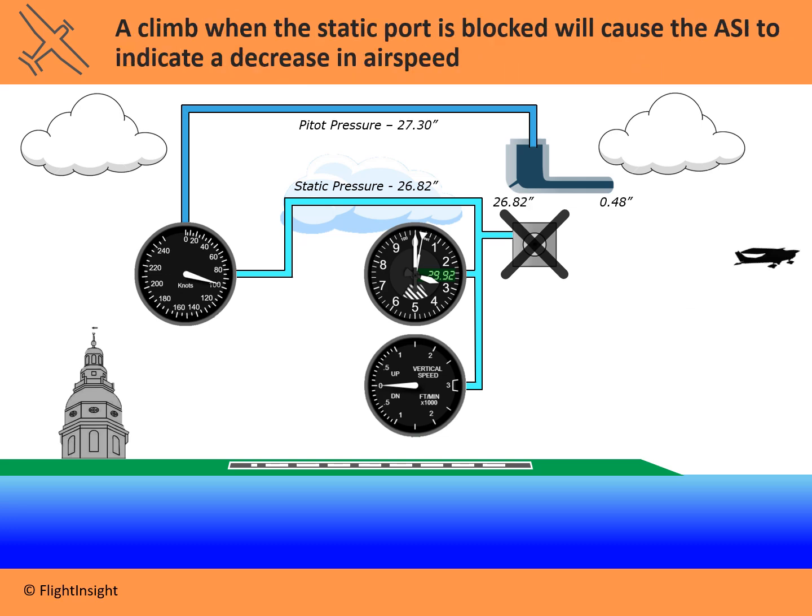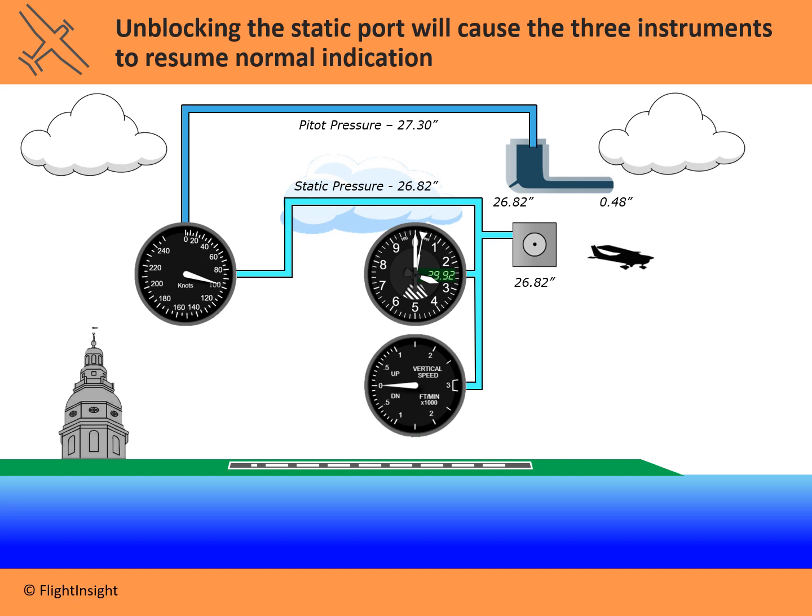The opposite happens when we climb. Going back up to 3,000 feet from 2,000 feet, the vertical speed indicator and altimeter are still frozen because of the blockage. But as we climb, pitot pressure will start to reduce again, so the difference between pitot and static gets smaller and the airspeed indication will start to go back down. So let's unfail the static port and go back to our baseline: straight and level, unaccelerated flight at 3,000 feet and 100 knots. Now let's see what happens when we have some failures or blockages in that pitot tube.